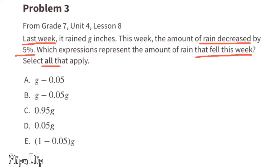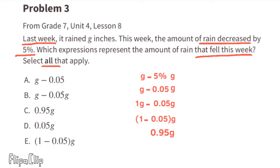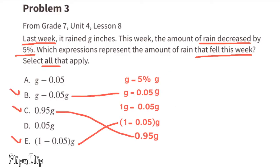Problem number three: Last week it rained g inches. This week the amount decreased by 5%. g represents last week's rain; this week we subtract 5% of g from g. 5% can be written as 0.05, so g minus 0.05g equals 0.95g. We can select expressions b, c, and e, which all represent this relationship.